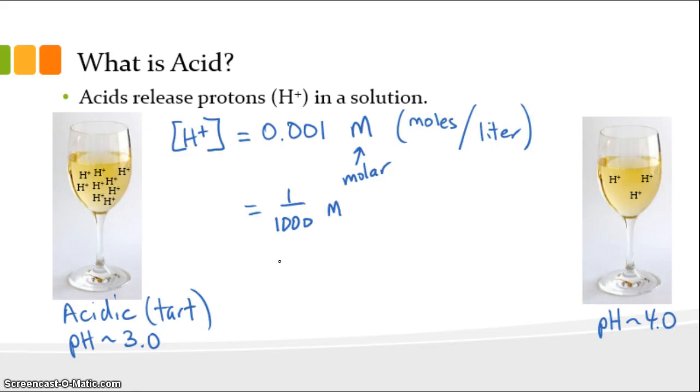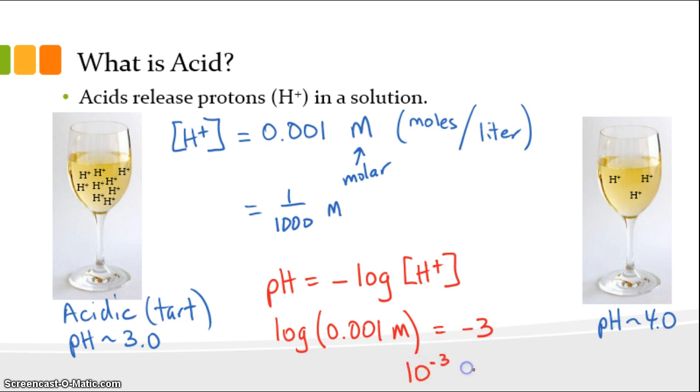Because protons are really important to us physiologically and in how wine tastes, chemists have come up with a method for discussing it, and that method is to use pH. pH is defined as the negative of the log of the proton concentration. The log of a concentration that equals 0.001 molar is the number to which we raise 10 to get that concentration. In this case it's minus 3, because 10 raised to the minus 3 equals 0.001. pH is the negative of the log, so the pH here equals 3.